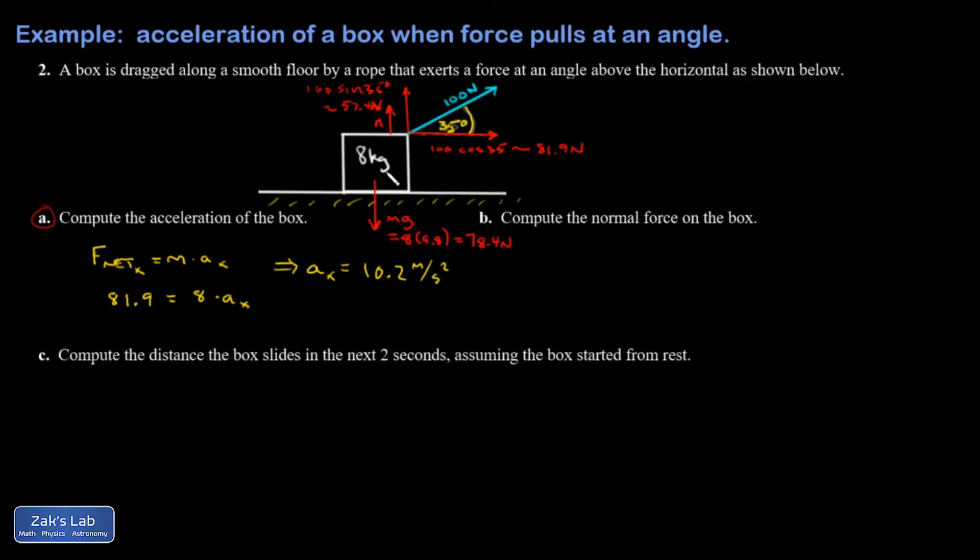So I have no acceleration in the y direction, which means it's safe to just say all the upward forces have to add to the same number as all the downward forces. So I'm going to write n plus 57.4 newtons. That's all the upward forces. It must be equal to all the downward forces, 78.4 newtons. So n is found from this little subtraction problem, 78.4 minus 57.4. And I get 21.0 newtons for the normal force.